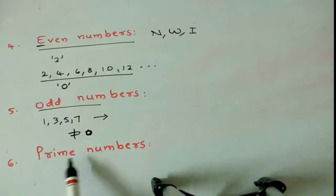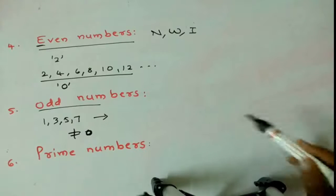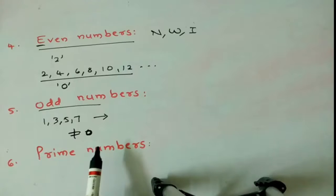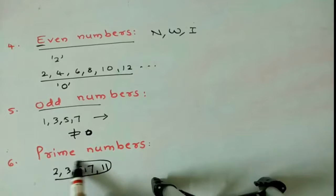So next, prime numbers. What are the prime numbers? It should be 2, 3, 5, 7. These are prime numbers. Why these are prime numbers?